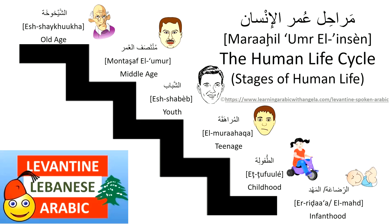Summary of terms: al-rida'ah / al-mahd — infanthood; bebe, walad, mawlud. For a boy: sabi; for a girl: binet. Childhood: tufl, tufla, atfal; also walad and wlad. Teenage stage: murahiq / murahiqa, murahiqin in the plural. Youth: shabb (young man) and sabiyya (young woman), shabab and sabaya in the plural. Middle age: muntasaf al-omr. Old age: al-shaykhoukha; common terms: khityar, khityara, kbar bil-sin, kbar bil-omor, musinneen.